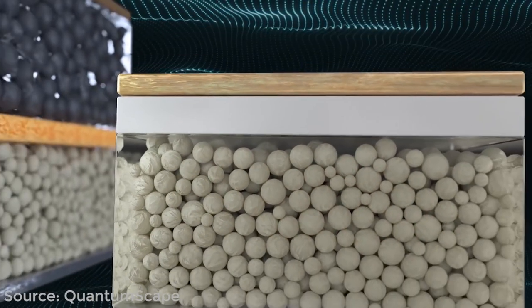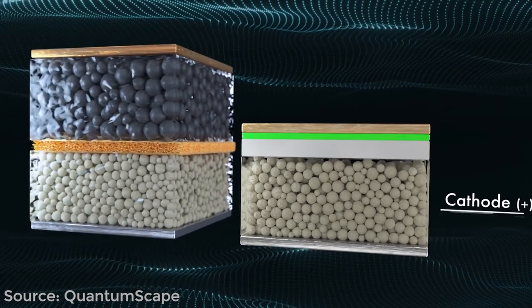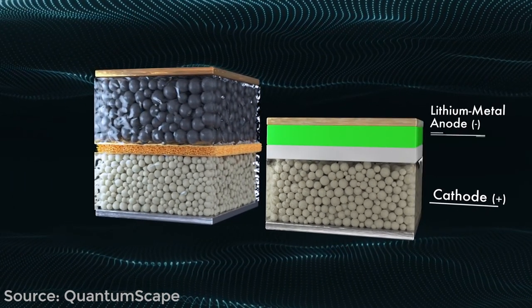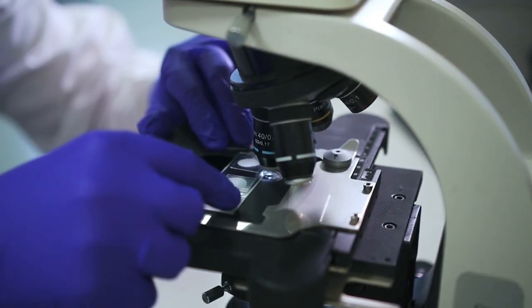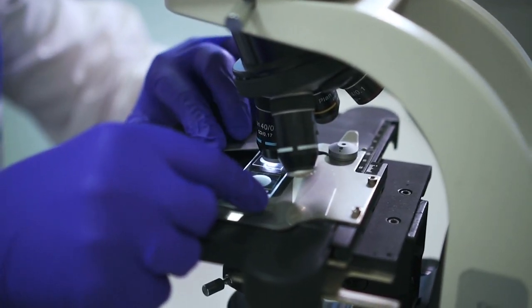Thankfully, by using solid electrolytes, these dendrites can be slowed and suppressed, enabling the high-density lithium metal anodes to be used. In reality, though, it's not quite that simple.